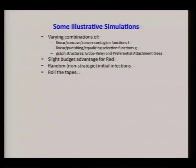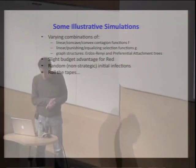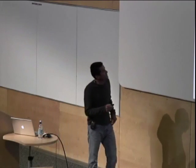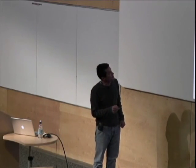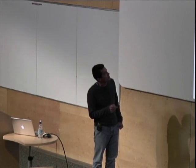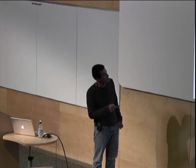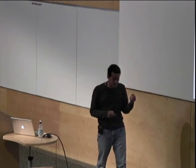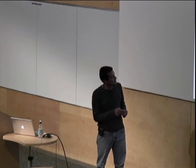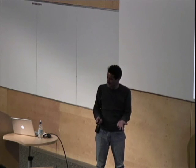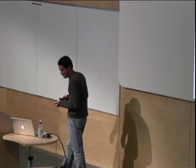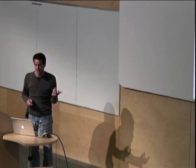Let me give some illustrative simulations showing varying combinations of linear, concave, or convex contagion functions; linear, punishing, or equalizing selection functions; and standard models for graph structures — Erdős–Rényi and preferential attachment. In all these simulations there will be a slight budget advantage for red, and importantly the initial infections are chosen randomly.